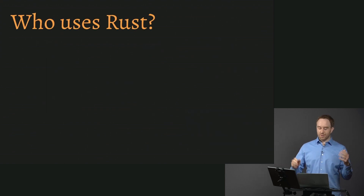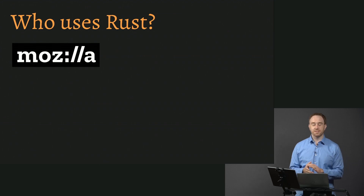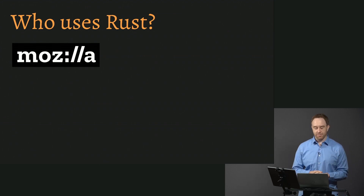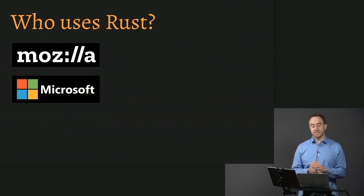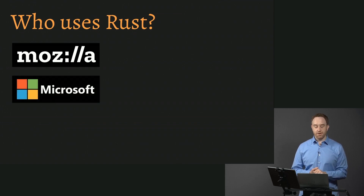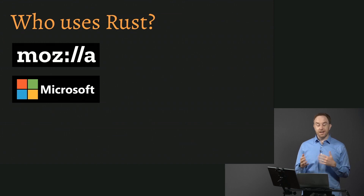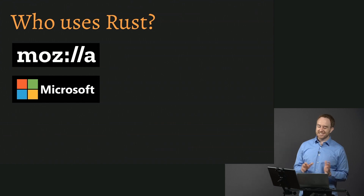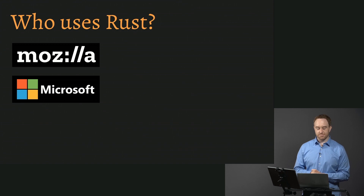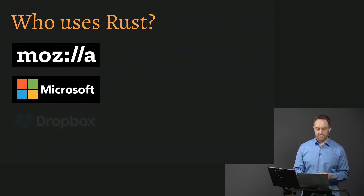Who uses Rust? All sorts of people and organizations. Mozilla is probably the most well-known because they were bankrolling Rust development for the first decade or so. They use it in Firefox to power some of their new rendering work that's been a lot faster than what they had before. Microsoft has also started using Rust in a big way — they're apparently rewriting some core low-level Windows components in Rust, and have joined the Rust Foundation as one of its most prominent members.